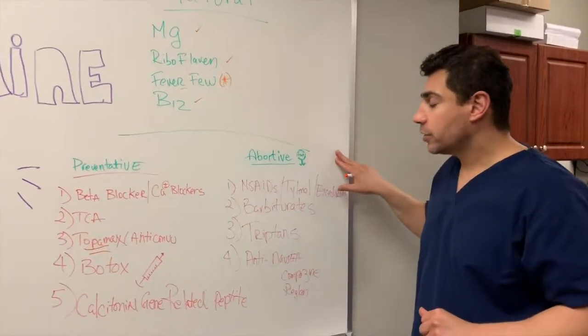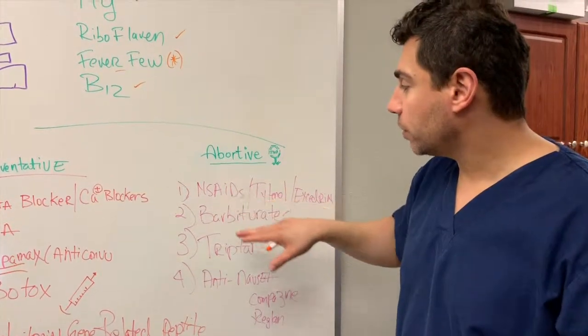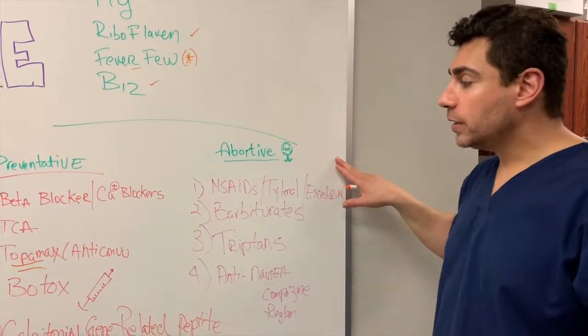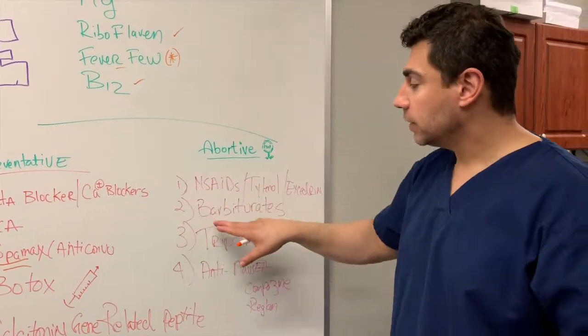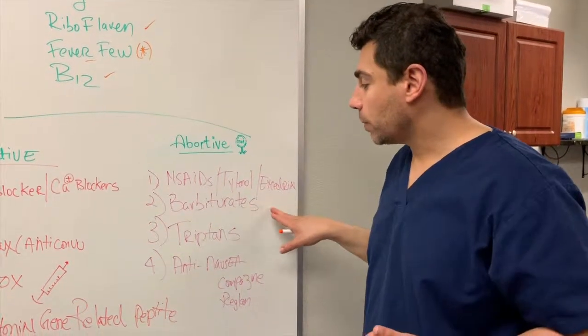The abortive medications are your typical anti-inflammatories. Your ibuprofen, your Aleve, your Tylenol, and then your Excedrin. So these can help just when you have a migraine immediately. Barbiturates. You've heard of Fioricet, Fiorinal. Those are barbiturates.